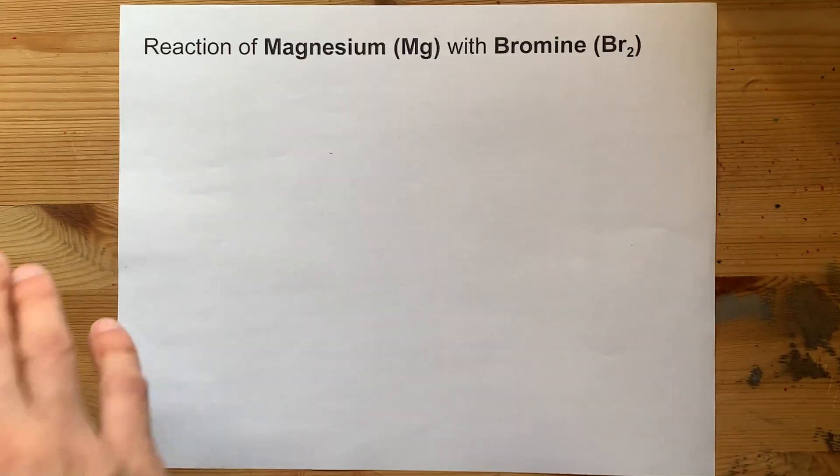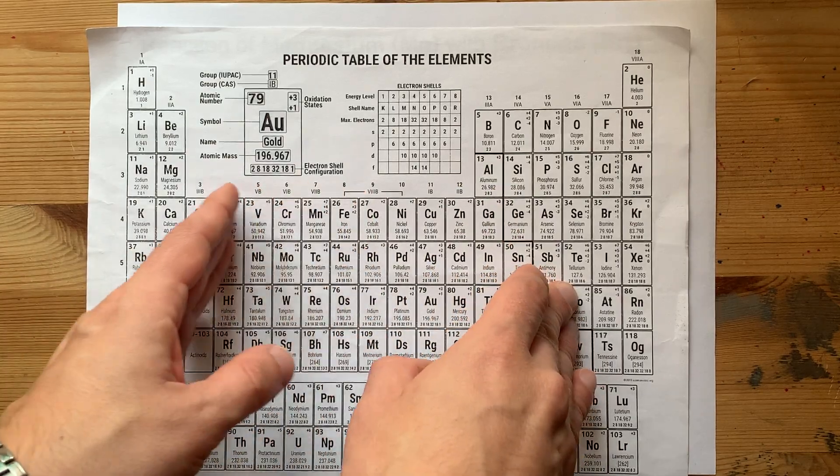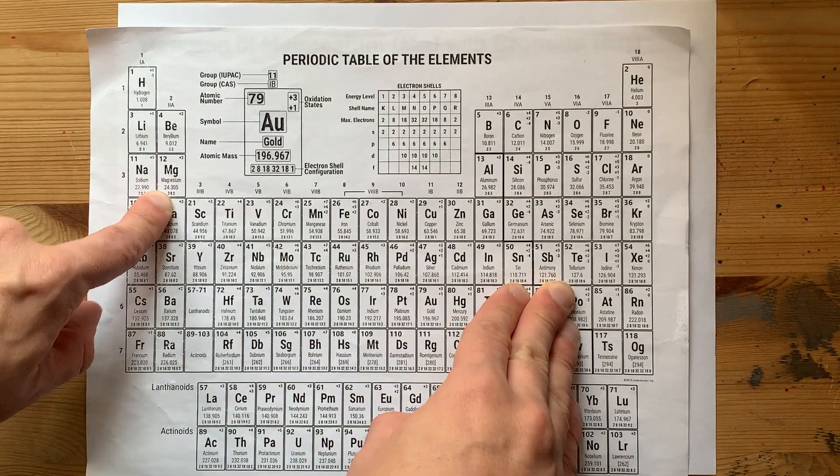The reaction of magnesium with bromine is straightforward as long as you recognize that magnesium is a metal from the left-hand side of the staircase.